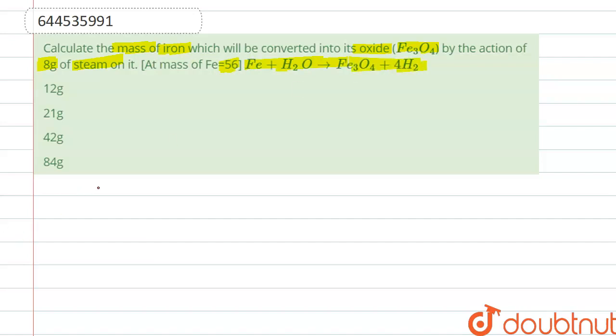So if we write the equation, that is Fe plus H2O which gives Fe3O4 plus 4H2. When we balance it, here it is 3 and here it is 4, so it is balanced.